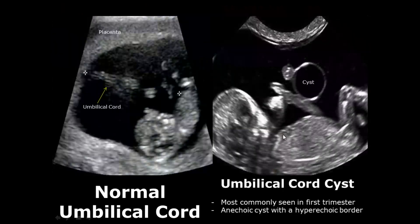Umbilical cord cysts can also occur. Most commonly they occur in the first trimester. Here in the normal image you can see a normal umbilical cord, and over here you can see an anechoic cyst with a hyperechoic border — this is an umbilical cord cyst.